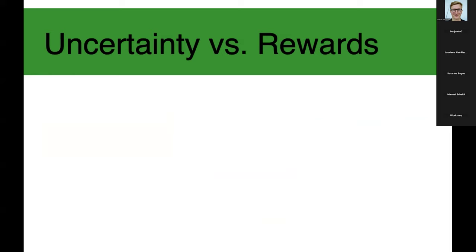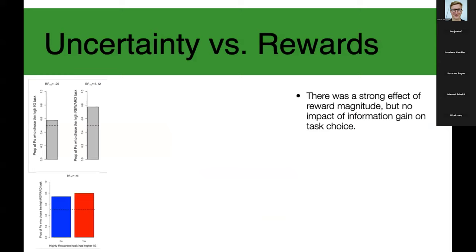We are still collecting data, but we already got almost 100 participants. We found so far that there was a strong effect of reward on the choice of which game they wanted to play. So basically, the two bars on top are the proportion of participants who chose the task having the higher uncertainty versus the grey bar on the right, is the proportion of participants who chose the game with higher reward. You can see that there is no effect of uncertainty on game choice, but there is a pretty strong effect of reward on game choice. That kind of makes sense. They chose the game they could win the most stickers for. And this is just basically a replotting of the same thing.